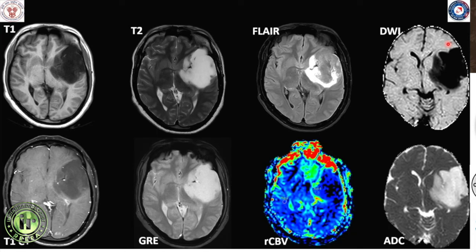As per the WHO 2021 CNS-5 classification, there is no IDH mutant glioblastoma anymore — it has to be an astrocytoma, and it is IDH mutant astrocytoma. Additionally, any more molecular markers that one can prospectively predict on this imaging feature of T2-FLAIR mismatch: it is a 1p19q non-co-deleted IDH mutant astrocytoma.